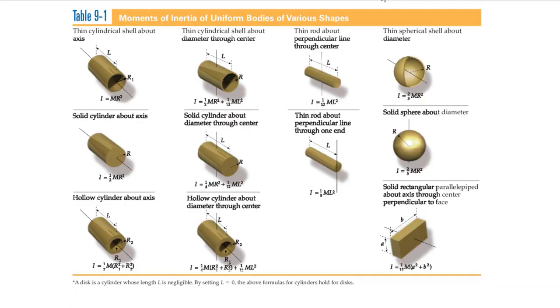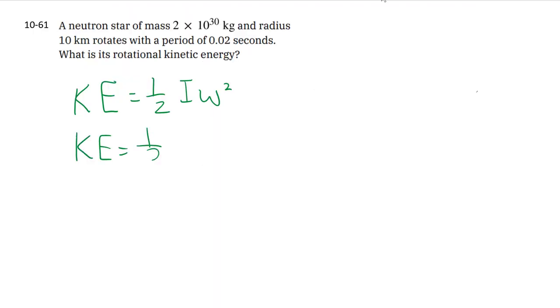So we have a solid sphere, so that's the one we're talking about. And the axis is indeed a diameter, which is a line that goes right through the center. And so we just have to substitute this expression in, 2 over 5 mr squared. We've been given the m, we've been given the r, so those are all easy to calculate.